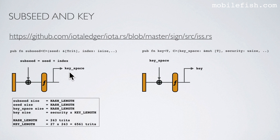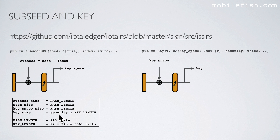The nonce size is 243 trites. To calculate the key, the key space is absorbed and the transformation function is applied. This function generates the key. The key is the private key and the key size is the security level times the key length, where the key length is 6,561 trites.